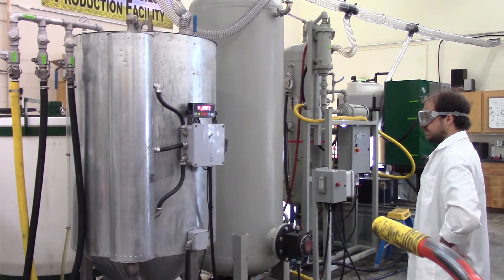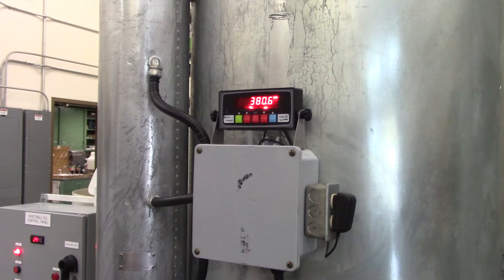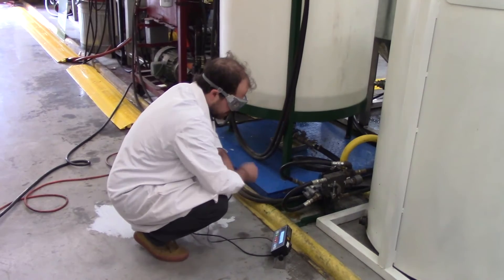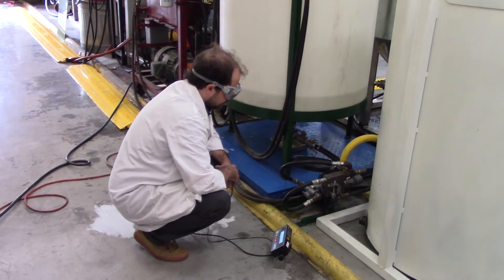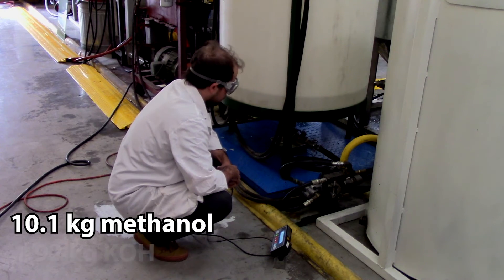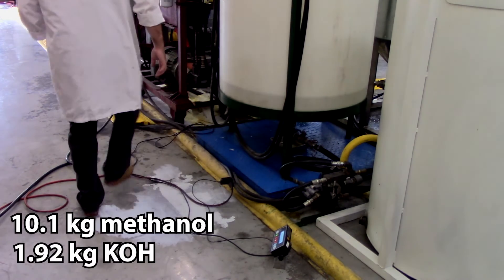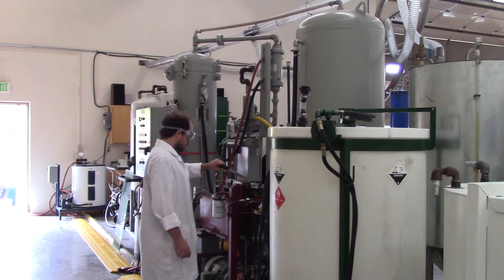Now we're ready for the second 20% reaction. The biodiesel is pumped back into the reactor, and the remaining 20% methanol and catalyst, which works out to 10.1 kilograms of methanol and 1.92 kilograms of catalyst, are mixed together in the tank before being pumped into the reactor.